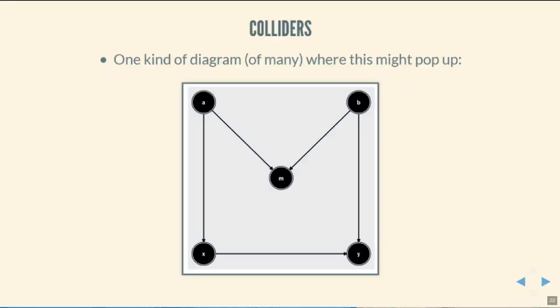This is a little bit hard to wrap your head around as to why this might be. Why is it the case that colliders do this? Basically, when you have two variables that each cause the same thing — so a and b are both causing m here — a and b are not related to each other. However, if you control for that variable, it makes them related to each other.